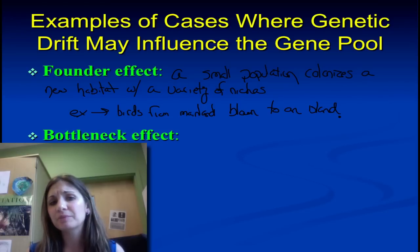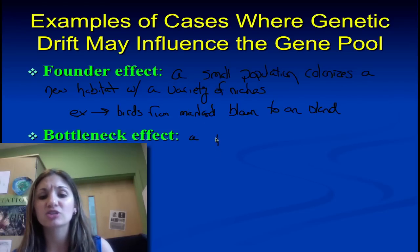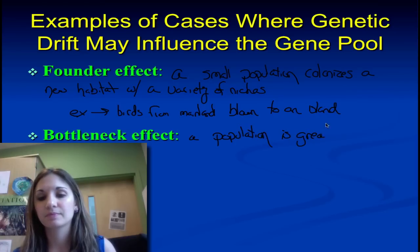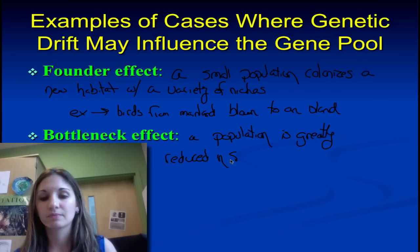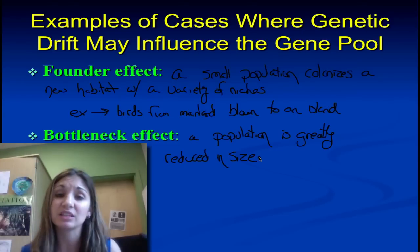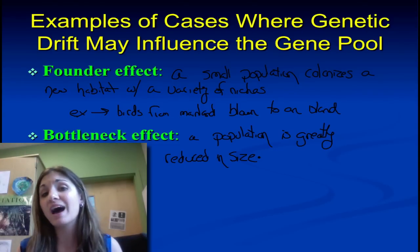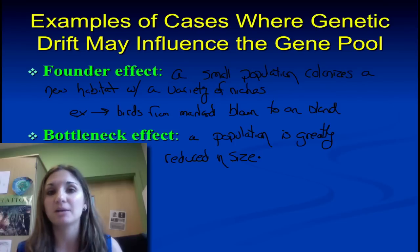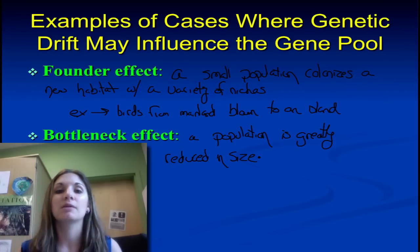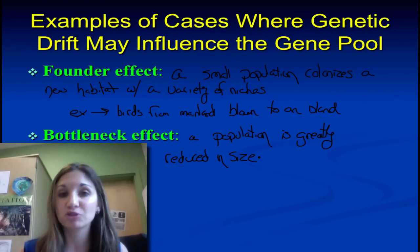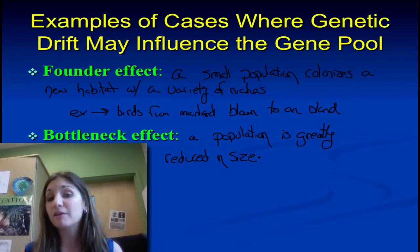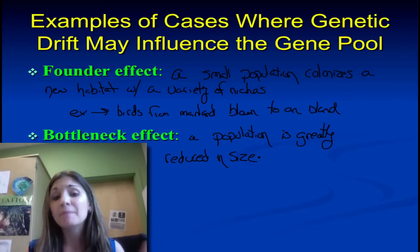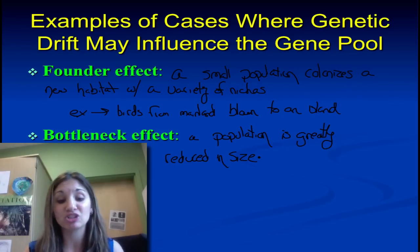Once that population is underway, other factors like sexual selection and natural selection are going to come into play. But that initial founding population is due simply to the chance that they were blown there. In the bottleneck effect, a population is greatly reduced in size, and those few individuals that have survived may not be representative of the alleles of the entire larger meta-population. The ones that happen to escape the drought or natural disaster — which had nothing to do with their fitness or traits — now establish that new population.